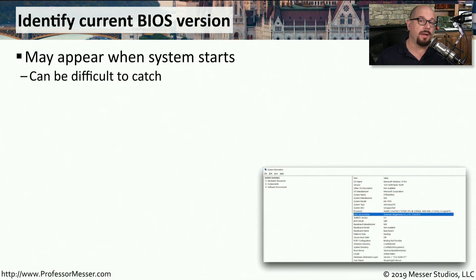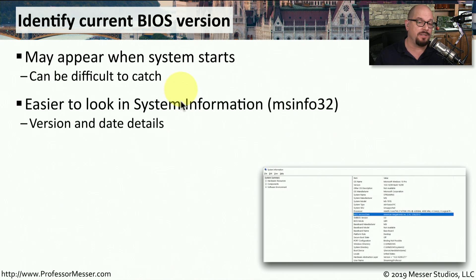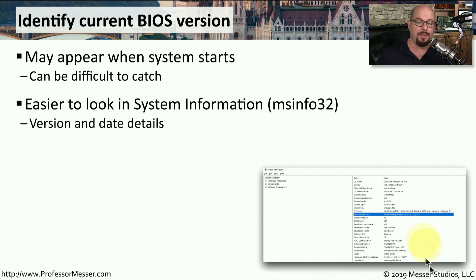To see what your current BIOS version happens to be, you may want to look as your system is booting up — it will occasionally have the BIOS version listed on that splash screen. This occasionally goes by so fast it may be difficult to see exactly what version is listed. If you're running Windows, you may want to look inside the system information utility, which you can start by typing msinfo32 at your Windows run box. This will provide you with version and date details about the BIOS running on your computer.